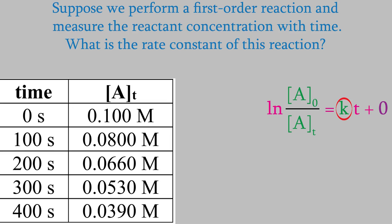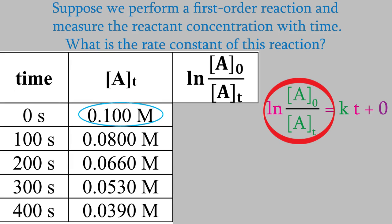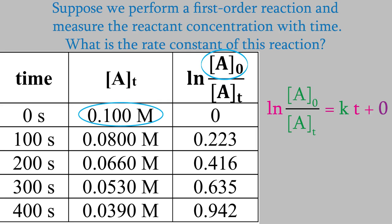To make the graph, we just need time for the x-axis, and we already have that information. We also need the logarithm of a0 over at for the y-axis. We don't have that yet, but we can calculate it. For each row, we'll calculate the logarithm of a0 over at using the concentration at time zero for a0. That gives us this data. If you have a table like this with a lot of rows, you can save time by doing the calculations using a spreadsheet like Excel instead of doing it all on your calculator.